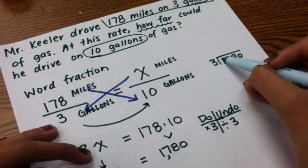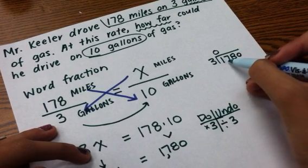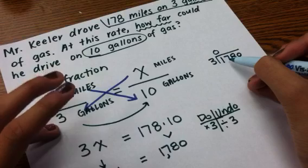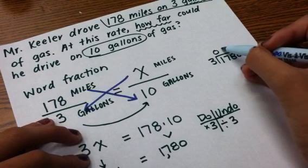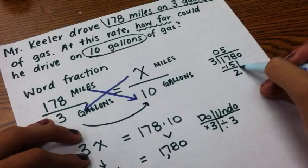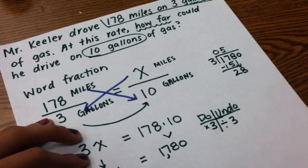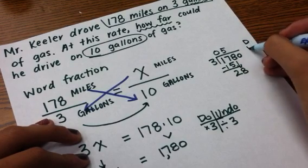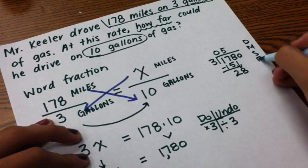I'm going to take 1780 and I'm going to divide it by 3. 3 doesn't go into 1, so I'm going to put a 0. 3 goes into 17, 3, 6, 9, 12, 15, 5 times. Bring down my 8. Remember, your steps are divide, multiply, subtract, bring down.